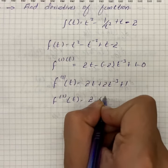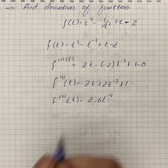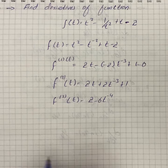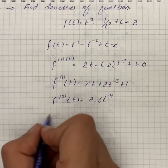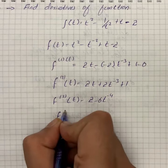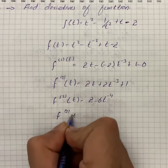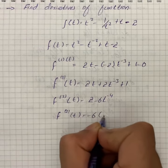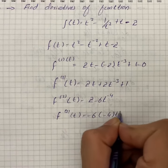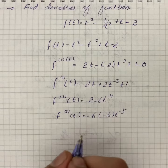So it turns out that f''(t) is equal to 2 minus 6t raised to the power minus 4. On further differentiation, f'''(t) is equal to minus 6 into minus 4 into t raised to the power minus 5.